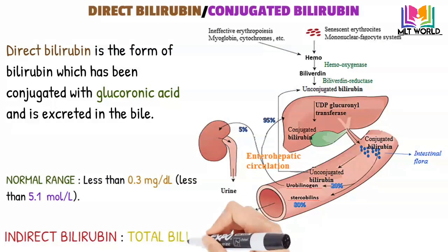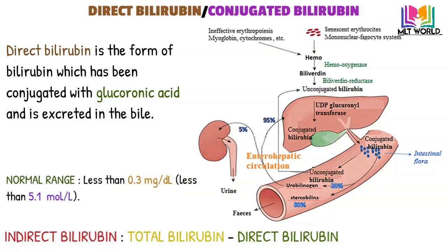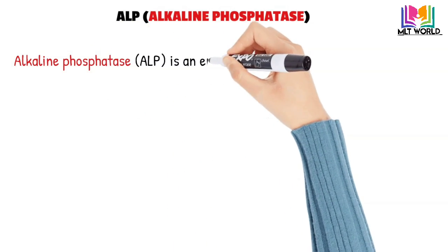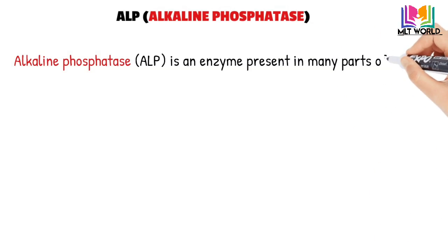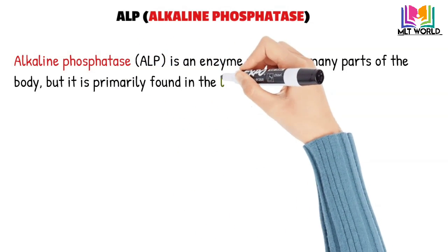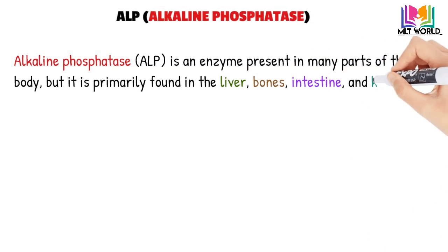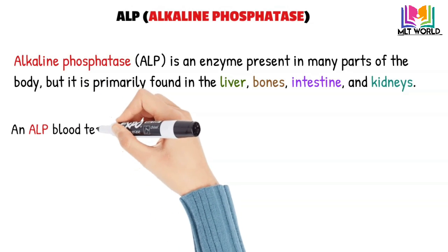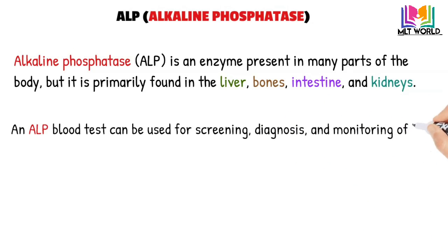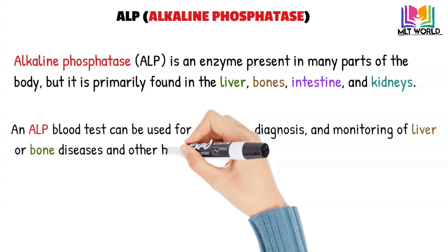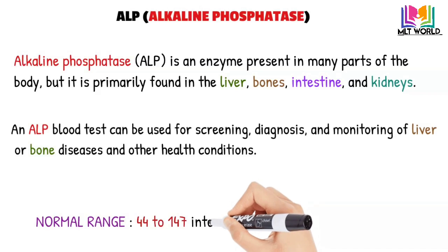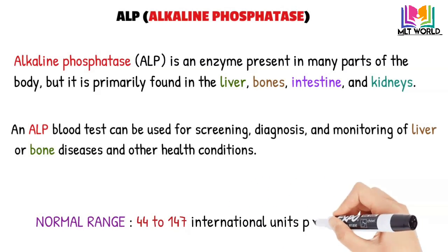Indirect bilirubin is calculated as total bilirubin minus direct bilirubin. Next is ALP, alkaline phosphatase, an enzyme found in the liver and bones that is important for breaking down proteins. Higher than normal ALP may indicate liver damage such as a blocked bile duct or certain bone diseases. ALP is less specific for the liver because it is also produced by bones, intestine, and kidney, and can be used for screening liver, bone disease, and conditions like gallstones. Normal range is 44 to 147 IU/mL, but this depends on the lab.